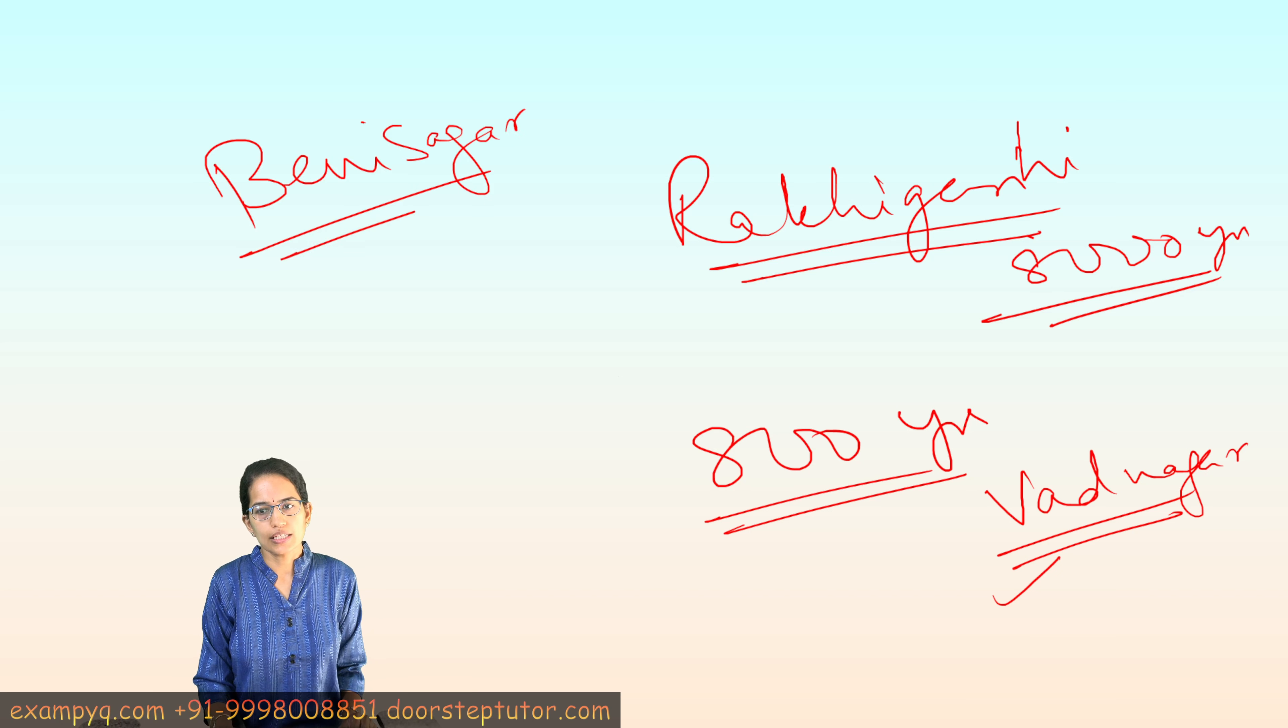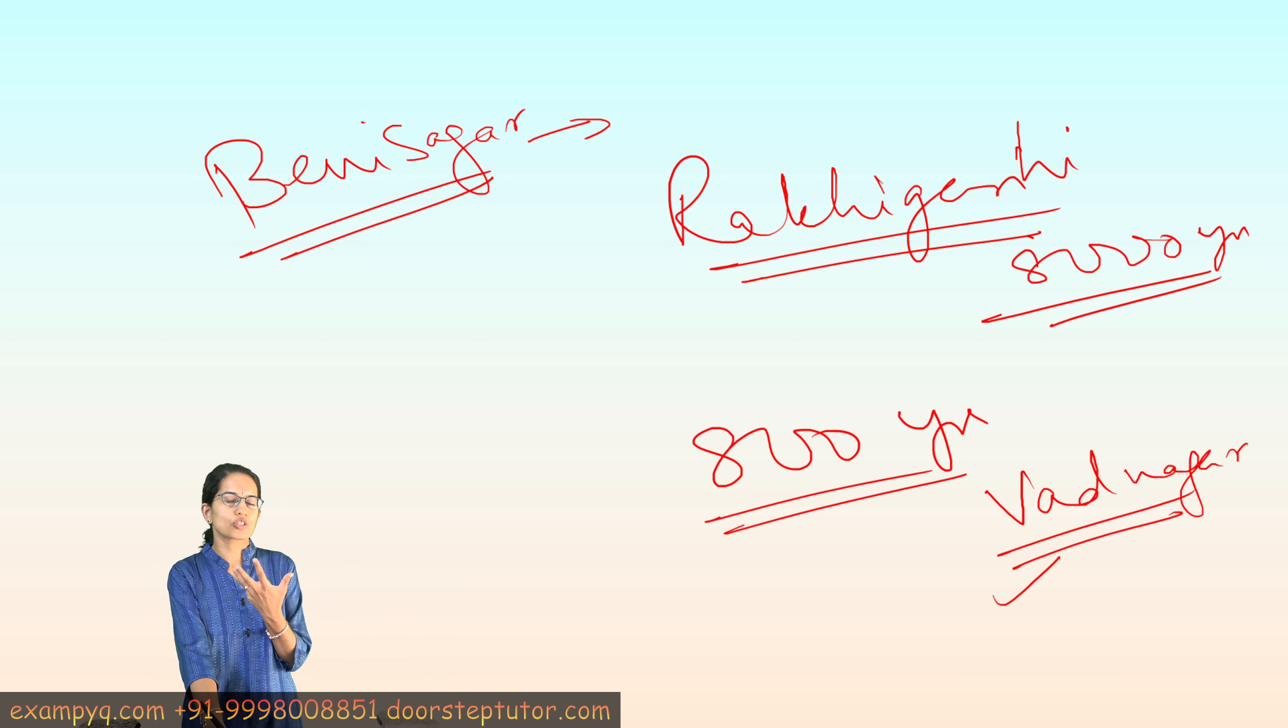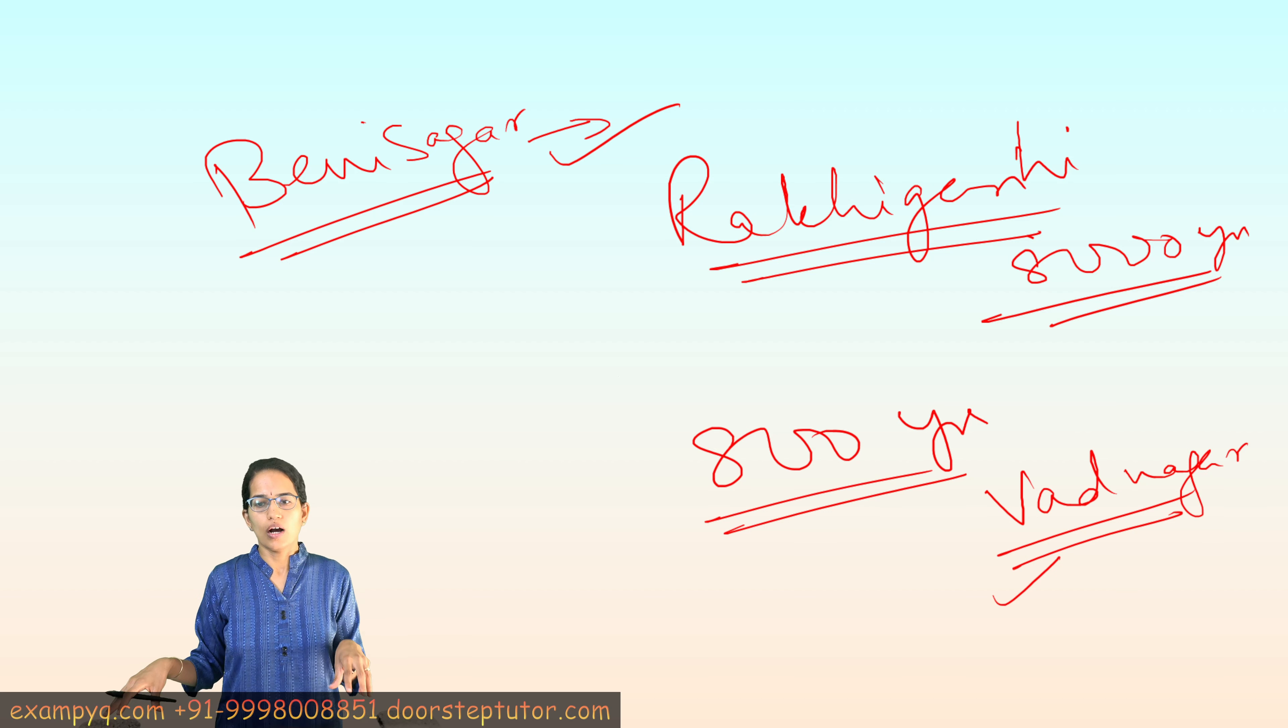Beni Sagar is another important region close to Mayurbhanj in Odisha and the regions of Jharkhand. This is the area where we have seen strong foundations with Hindu sculptures. Temple complexes with images of Surya Bhairav, Agni, Kuber and Lakulish have been seen in Beni Sagar. There has also been a stone seal with Chatur Vidya indicating Priyangu which has been inscribed.